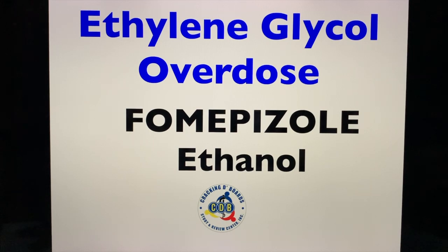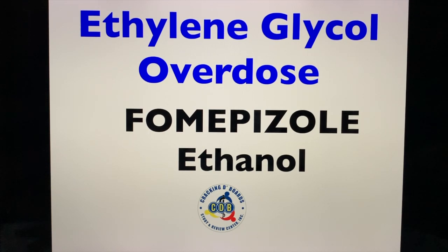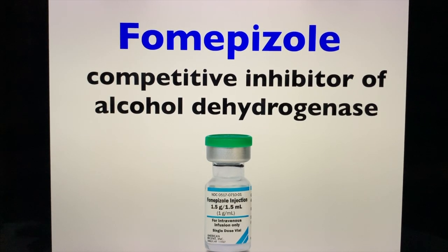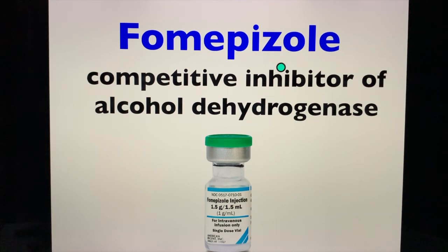Ethylene glycol overdose — ethylene glycol is usually seen in antifreeze. The drug of choice is fomepizole, and you can also use ethanol in the treatment of ethylene glycol overdose. Some references state that both methanol and ethylene glycol poisoning can be treated with fomepizole. Note: fomepizole is a competitive inhibitor of alcohol dehydrogenase — please don't confuse it with proton pump inhibitors.